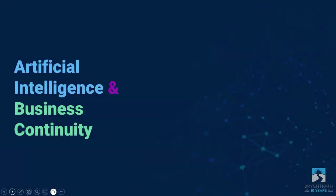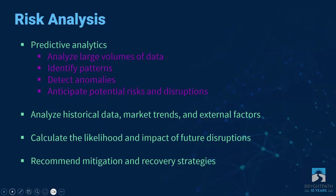Now that we've talked about a level set on what AI is, we're going to talk about AI and business continuity and how they can go together. When talking about business continuity, there are many components that enter into the overall topic of BC. Starting with risk analysis: we can use AI to help with predictive analytics, meaning we can analyze large volumes of data, identify patterns, detect anomalies, or anticipate potential risks and disruptions.